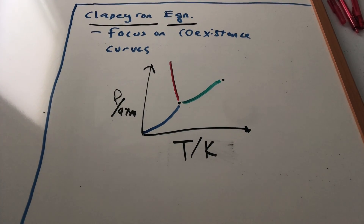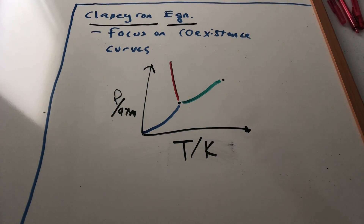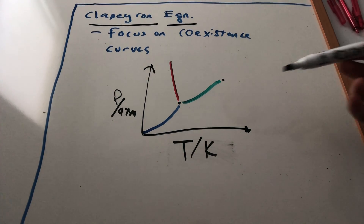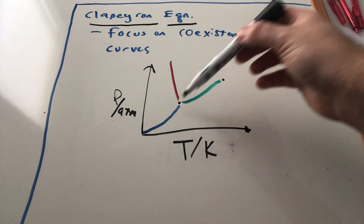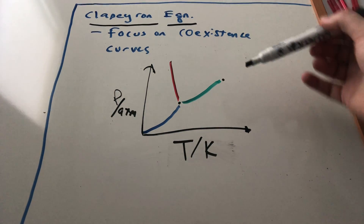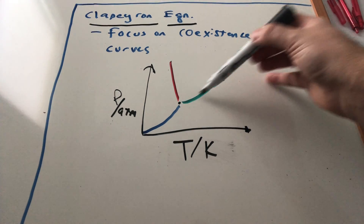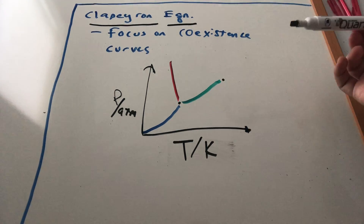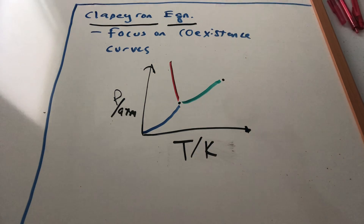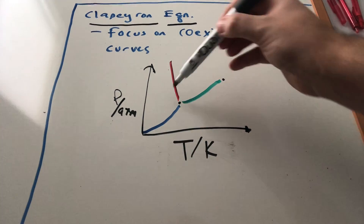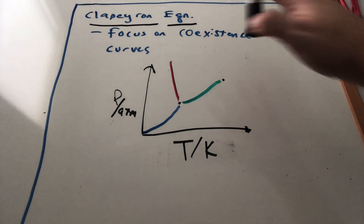The last topic we have to discuss with respect to phase diagrams involves the Clapeyron equation. What it does is analyze the phase diagram, focusing on important regions where you have coexistence of multiple species. To review: the sublimation vapor pressure line is where solid and gas coexist, the green vapor pressure line is where liquid and gas coexist, and the red melting point line is where solid and liquid coexist. These coexistence lines are what the Clapeyron equation focuses on.